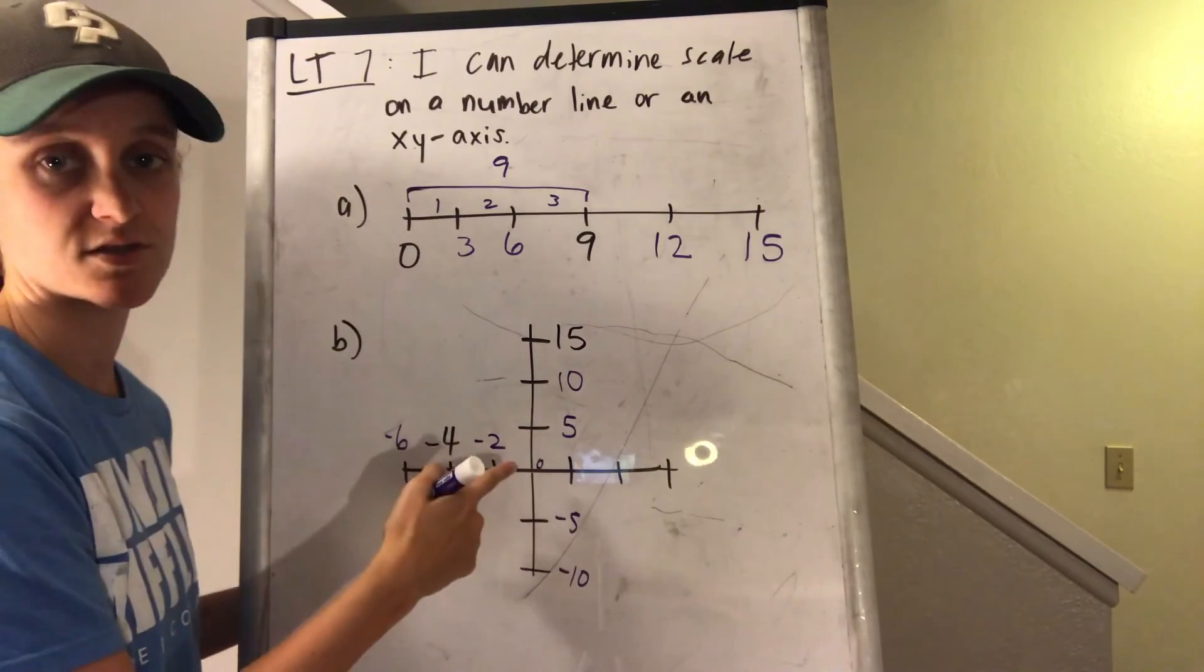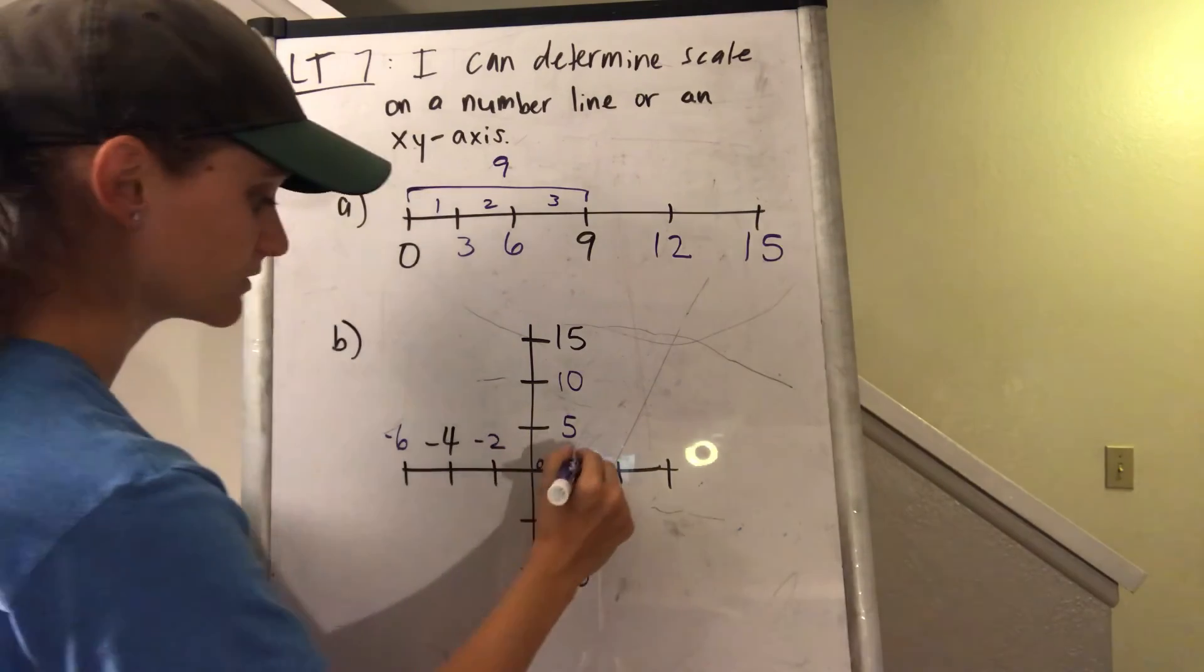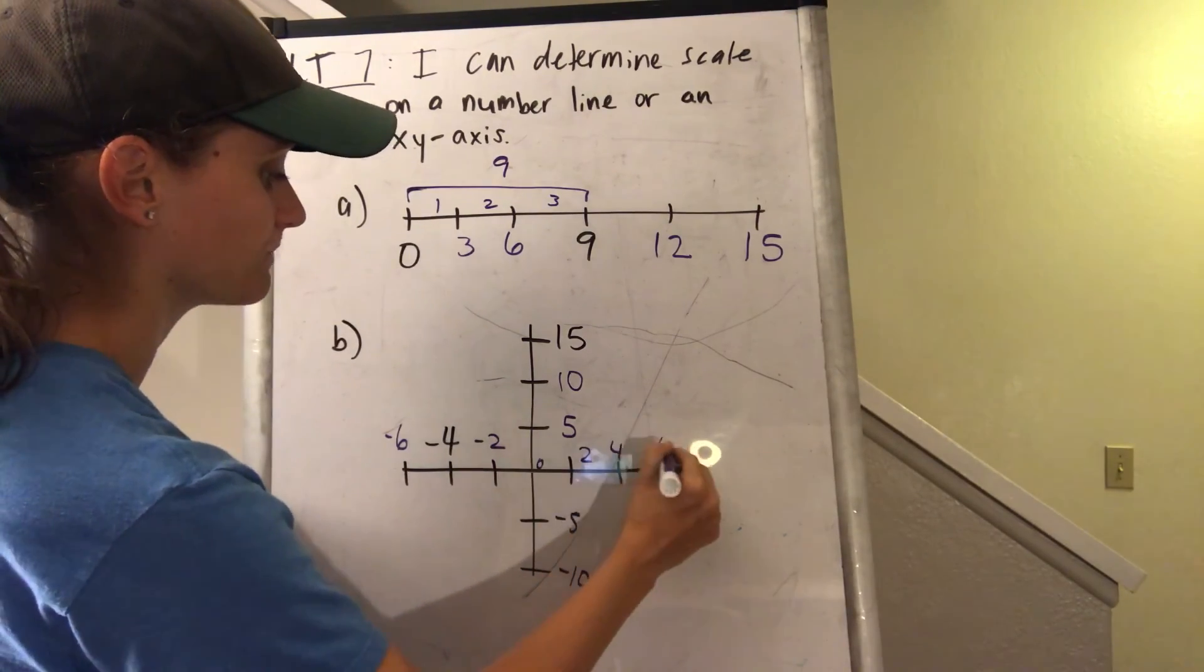So even if it's negative, it's still the same idea. And I'll continue the trend this way. So I have negative 2, 0, 2, 4, and 6.